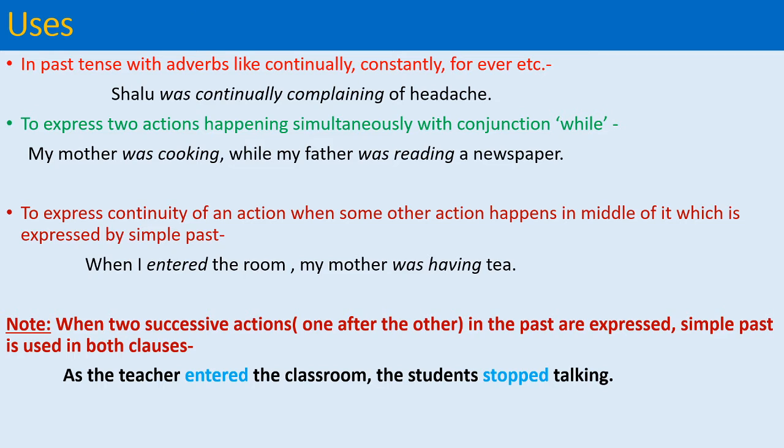The uses of past continuous tense: First, it is used with adverbs like continually, constantly, and forever. For example, 'Shalu was continually complaining of headache.' 'He was always grumbling.' Second use is to express two actions happening simultaneously, and in such sentences we use the conjunction 'while'. For example, 'My mother was cooking while my father was reading a newspaper.' 'Maya was singing whereas Gita was dancing.'